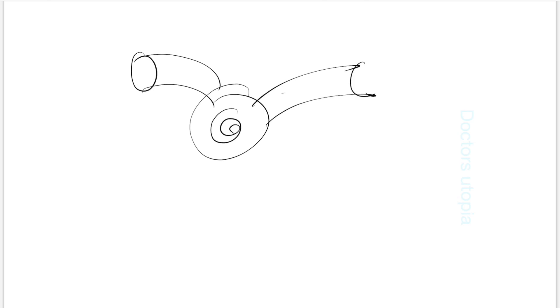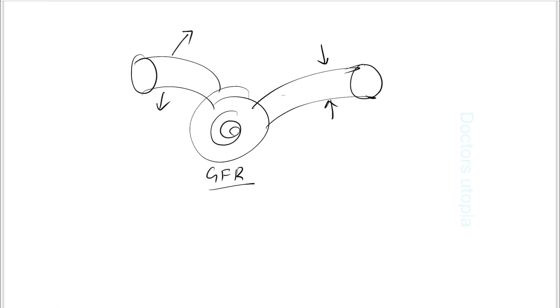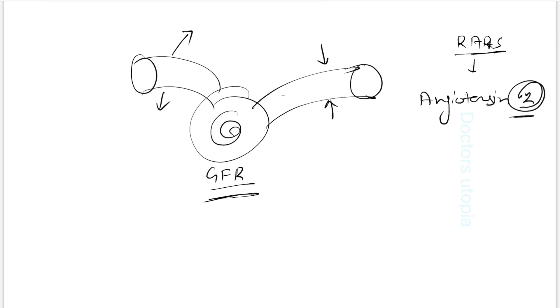Let's look at an example of drugs causing pre-renal AKI. Consider the glomerulus — the afferent arteriole brings blood in and the efferent arteriole takes blood out. To maintain proper GFR, the kidney uses its own auto-regulation with vasodilators and vasoconstrictors. Angiotensin 2, the end product of the RAS system, acts on the efferent arteriole to constrict it and maintain GFR.